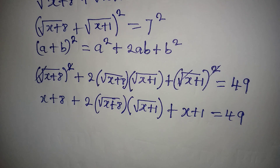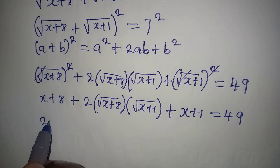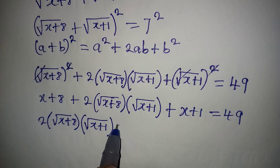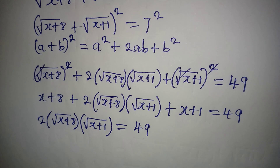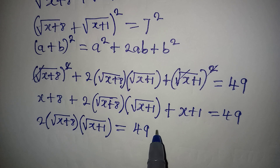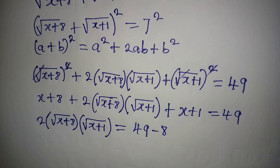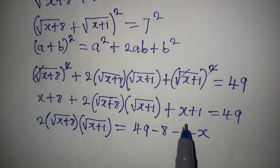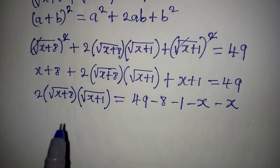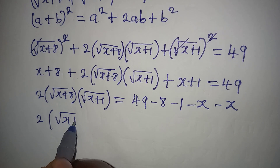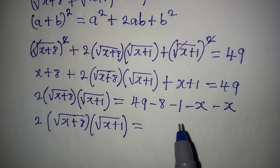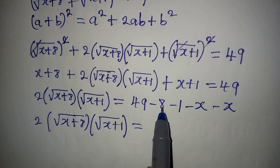Now I want to isolate the radical term. I rearrange: 2 times square root of (x + 8) times square root of (x + 1) equals 49 minus 8 minus 1 minus x minus x. So that gives us 2 times square root of (x + 8) times square root of (x + 1) equal to 40 minus 2x.